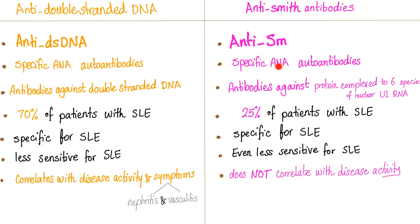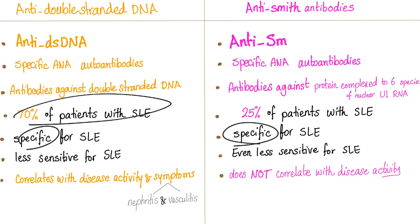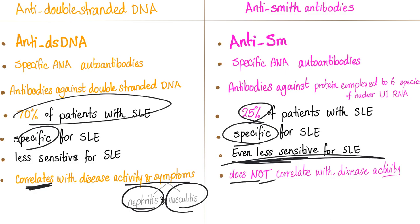Both anti-double-stranded DNA and anti-Smith are specific subtypes of ANA, because the double-stranded DNA is in the nucleus and Smith antigens are part of nuclear proteins — proteins complexed to six species of nuclear U1 RNA or RNP. Anti-dsDNA is present in 70% of lupus patients; anti-Smith in 25%. Anti-dsDNA is therefore more sensitive. Both are specific for lupus. Anti-double-stranded DNA correlates with disease activity including lupus nephritis and vasculitis; anti-Smith does not correlate with disease activity and is not associated with drug-induced lupus.